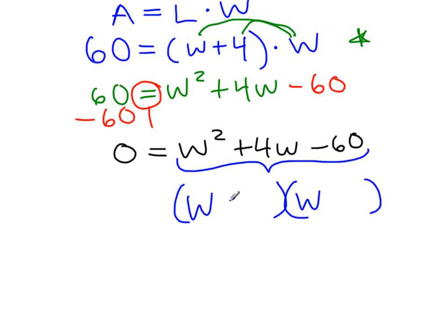And the winners, since the B term's positive, the bigger one gets the sign. The other one will have to be negative. 10 times negative 6 is negative 60, and 10 minus 6 is positive 4. Still equal to 0.